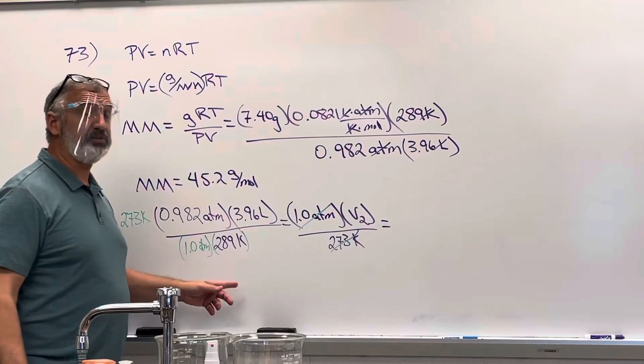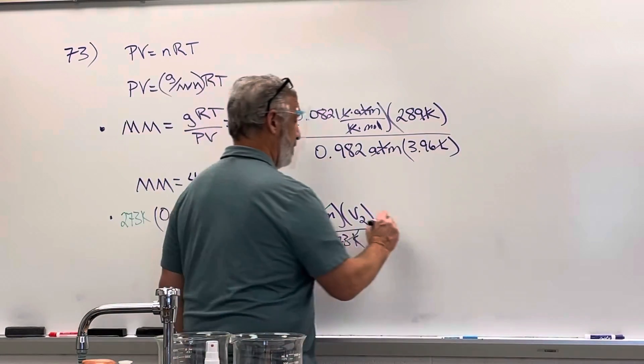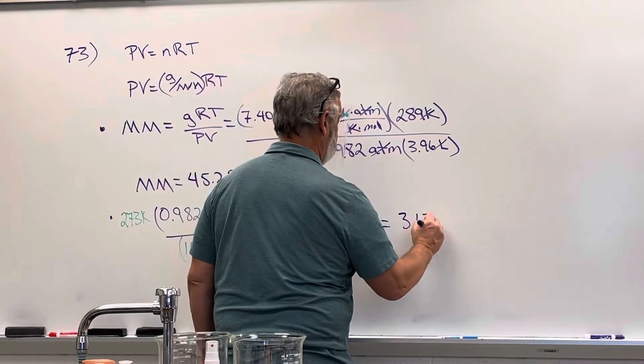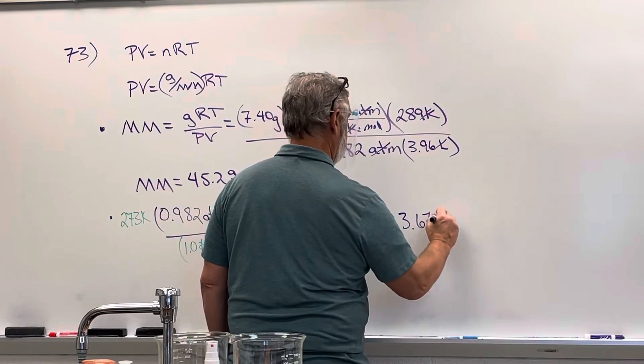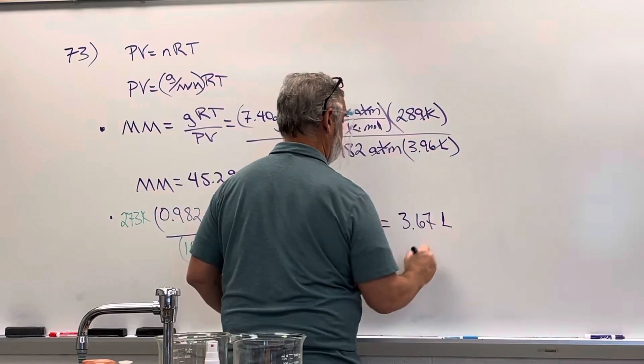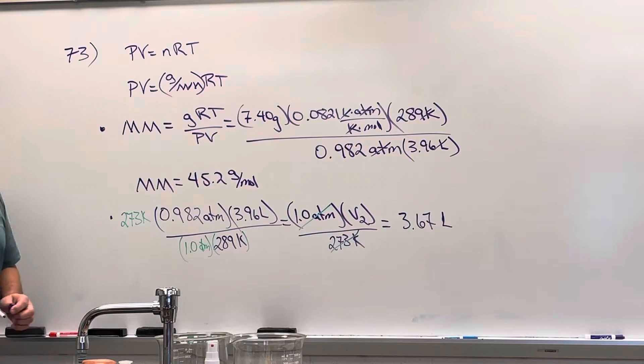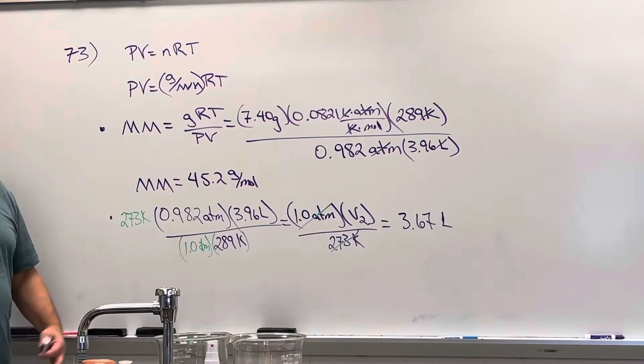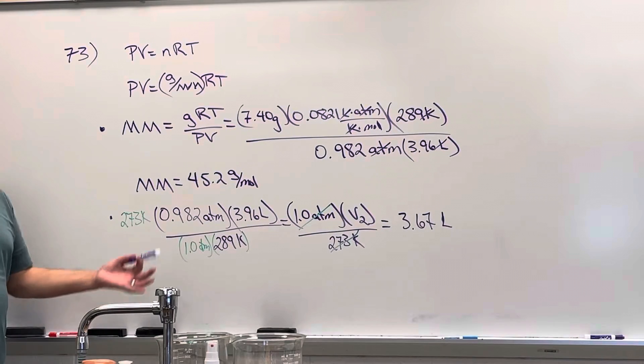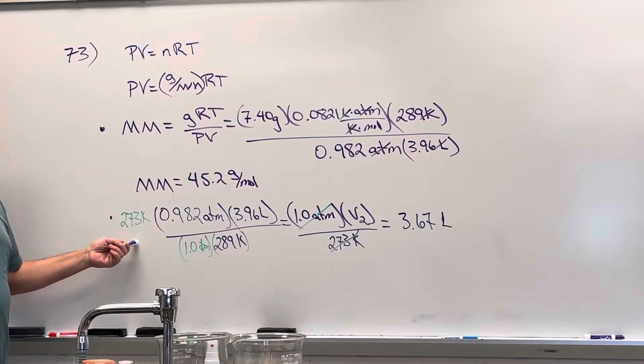So we just do all this out, 3.67. When you have two sets of conditions, anytime it says what's going to be at STP, you're probably going to need to use the combined gas law.